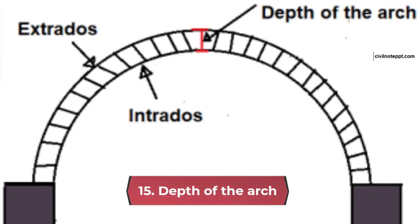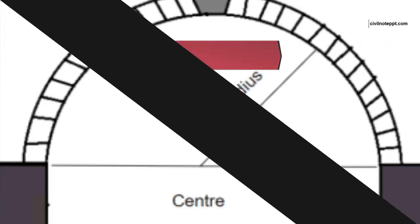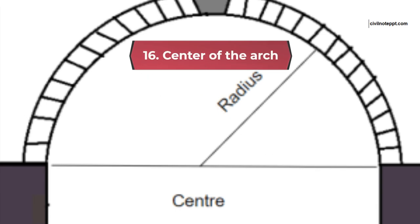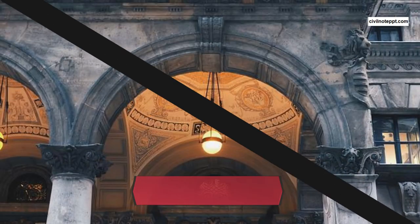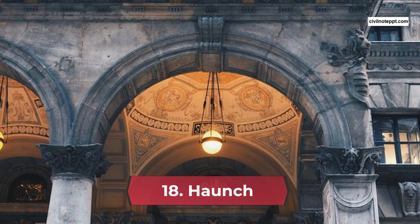15. Depth of the arch. It is the vertical distance between the intrados and extrados of an arch. 16. Center of the arch. As its name suggests, it is the geometrical center of the curve of an arch. 17. Rise of the arch. It is the perpendicular distance between the springing line and the highest point of the intrados curve of the arch. 18. Haunch. If you imagine a line between the crown and skewback, then the portion below the imagined line is known as haunch.